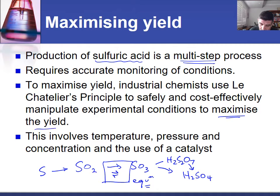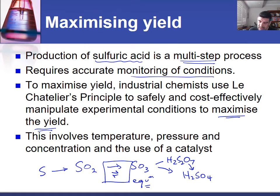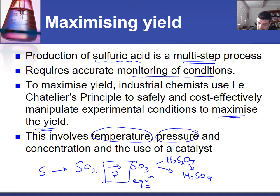Industrially the whole purpose is always to ensure we're producing the greatest yield. In the same way as we discussed maximizing yield in the Haber process, we do the same thing here for sulfuric acid production. We need to monitor the reactant conditions and keep an eye on temperature, pressure, the concentration of both products and reactants, and potentially the use of a catalyst.